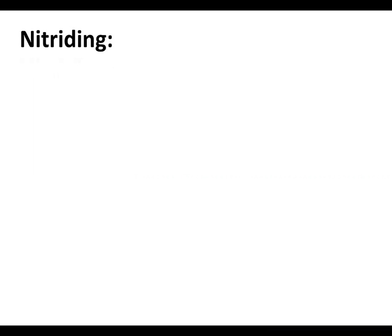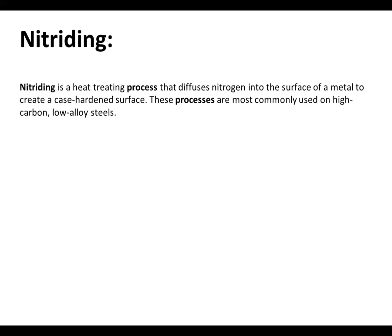Now you can see here the nitriding process, cyaniding process, box furnace and muffle furnace. In the previous lecture we have seen the types of heat treatment process like annealing, normalizing, and quenching. Now we will see the nitriding process. Nitriding is a heat treatment process that diffuses nitrogen into the surface of a metal to create a case-hardened surface. These processes are most commonly used on high carbon and low alloy steel.